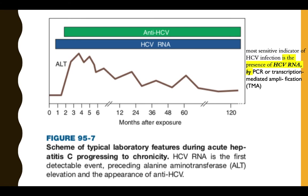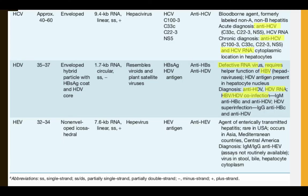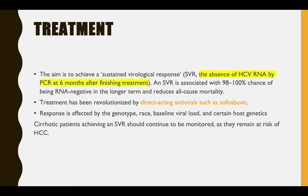So for HCV diagnosis we have anti-HCV antibody and HCV RNA. The most sensitive indicator is HCV RNA by PCR. HCV RNA is the first detectable event, before symptom onset, along with elevated ALT levels. For acute diagnosis: HCV RNA. For chronic diagnosis: anti-HCV and HCV RNA. Treatment aims to achieve a sustained virological response — meaning absence of RNA six months after treatment — which tells you the virus has been cleared. HCV treatment has been revolutionized in recent years with new medications.